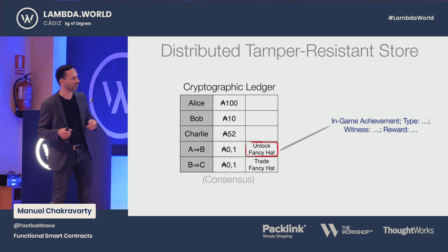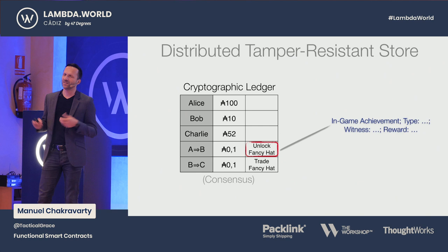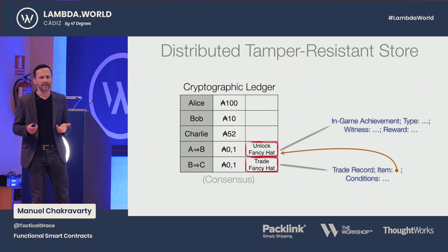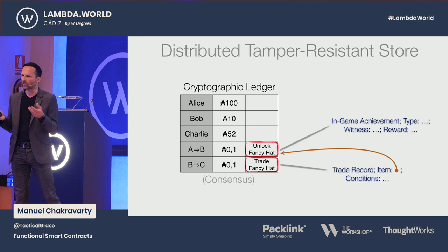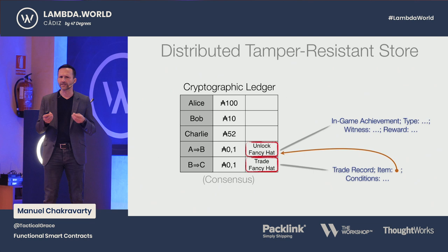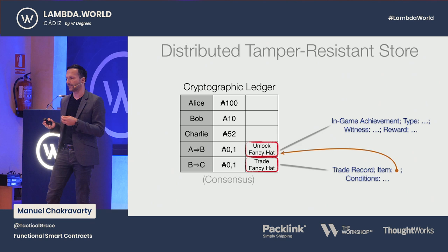Let's suppose we have some such game which Alice made, and Bob does something awesome and gets a fancy hat. Maybe he doesn't like that fancy hat so much, but Charlie likes it much more, and they want to trade it. Now it starts to become a little bit interesting, because in this trade, to make sure it is valid, we really have to check that Bob completed this achievement. So now we have some additional rules which tell us which kind of transactions, which kind of information can we put on this ledger. We call these the validation rules — additional, custom, data-specific, application-specific validation.